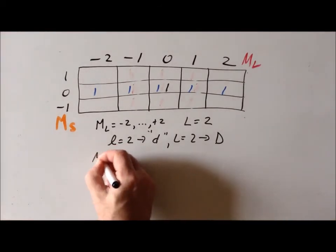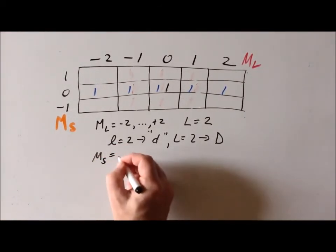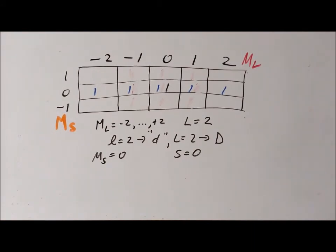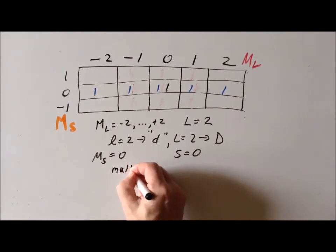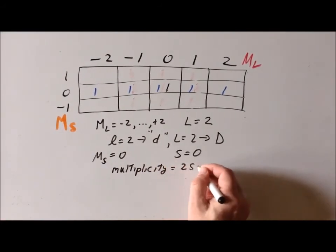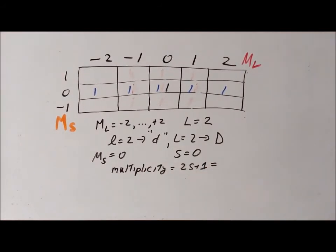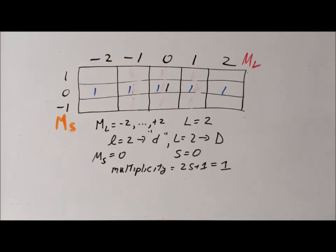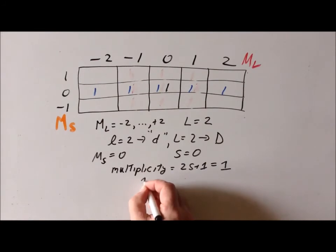As far as big M sub S goes, the only value that we have is zero, and this corresponds to a case where big S is equal to zero. Recall that when deriving the symbols we generally work with the multiplicity, which is two S plus one. Substituting big S equals zero into two S plus one, we get a spin multiplicity of one. We refer to these types of states as singlet states. Therefore the overall term symbol for this particular state is a singlet D.